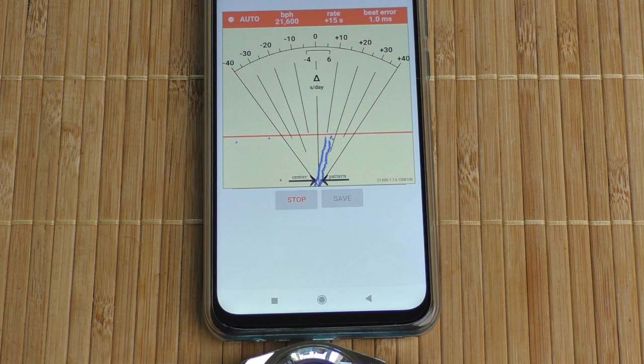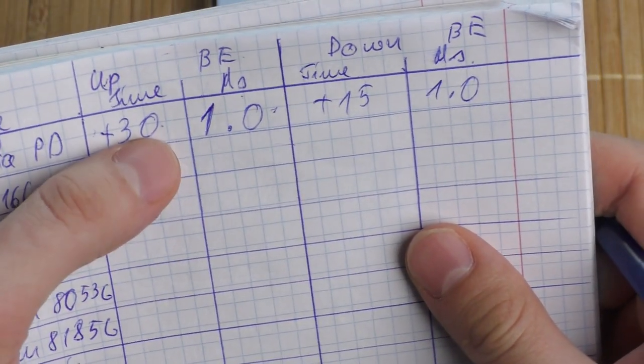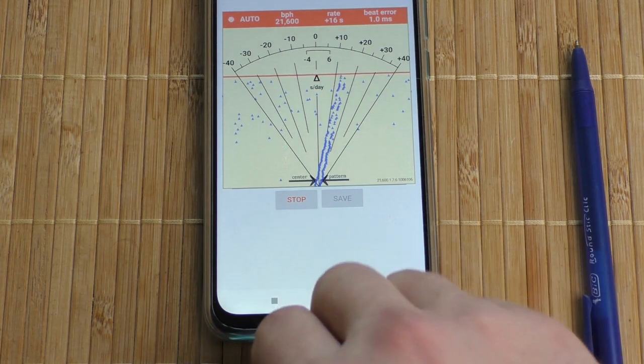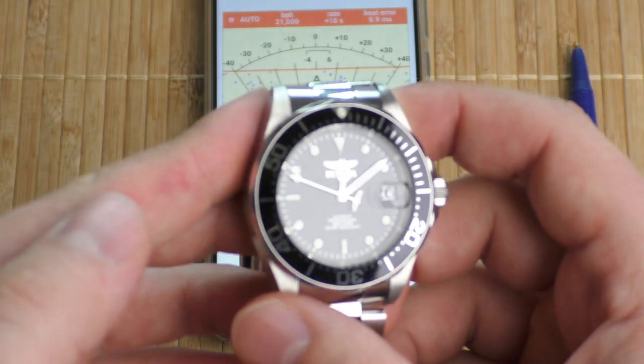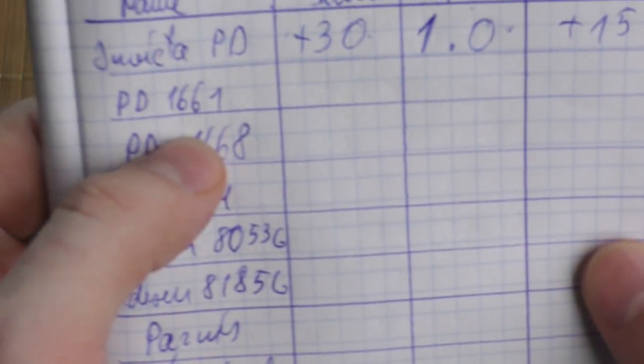Interesting, rather different results. Instead of plus 30, this time is plus 15 seconds. Beat error is the same though. Quite a big difference, 30 seconds and 15. Still a nice watch. Okay, so what's the next watch on my list?